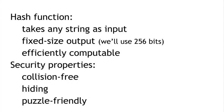A cryptographic hash function is a mathematical function, and it has three attributes that we need to start with. First of all, a hash function can take any string as input — absolutely any string of any size. It produces a fixed size output. We'll use 256 bits in this series of lectures because that's what Bitcoin does. And it has to be efficiently computable, meaning given a string, in a reasonable length of time you can figure out what the output is.